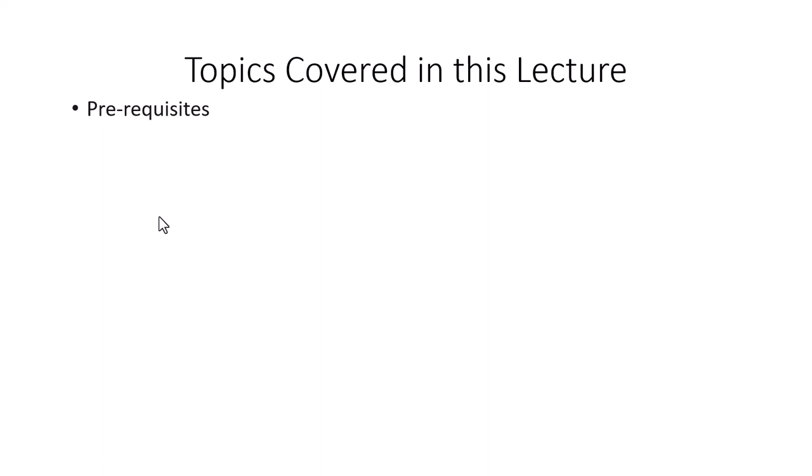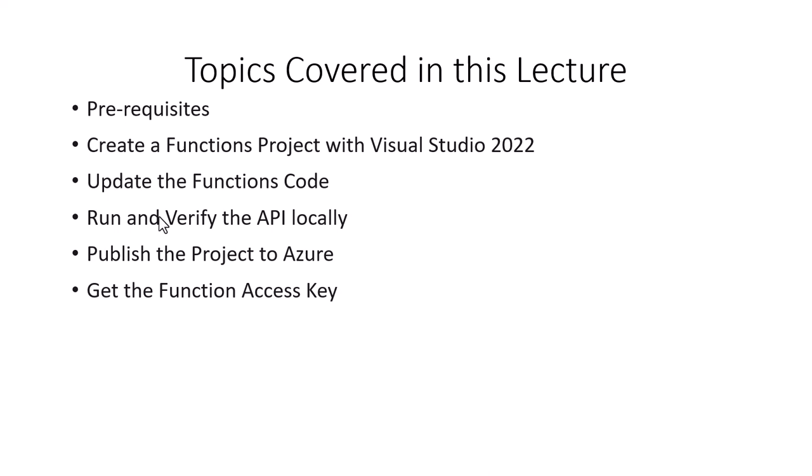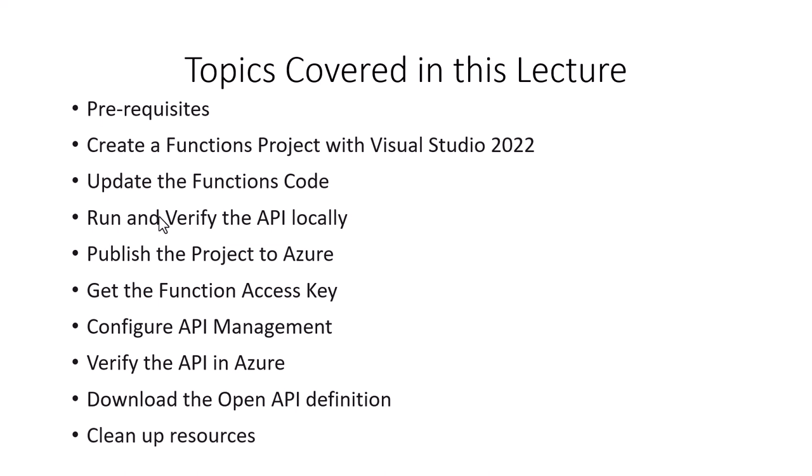The topics covered in this lecture are: first, the prerequisites, which will be discussed and need to be already installed along with an active Azure subscription. Then we'll create a functions project with Visual Studio 2022, update the functions code, run and verify the API locally, publish the project to Azure, hit the function access key, configure API management, verify the API in Azure, download the open API definition, and finally clean up the resources.